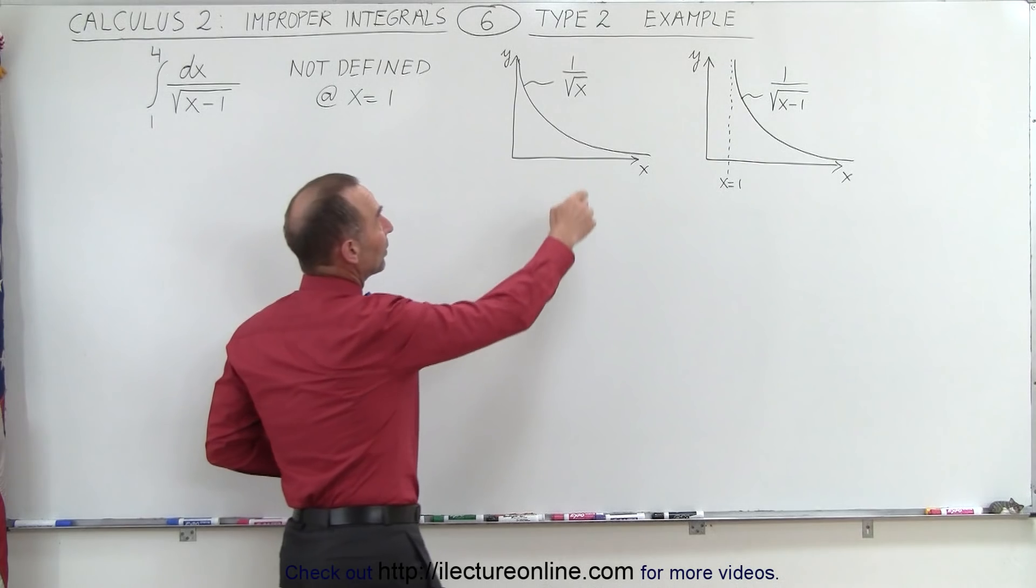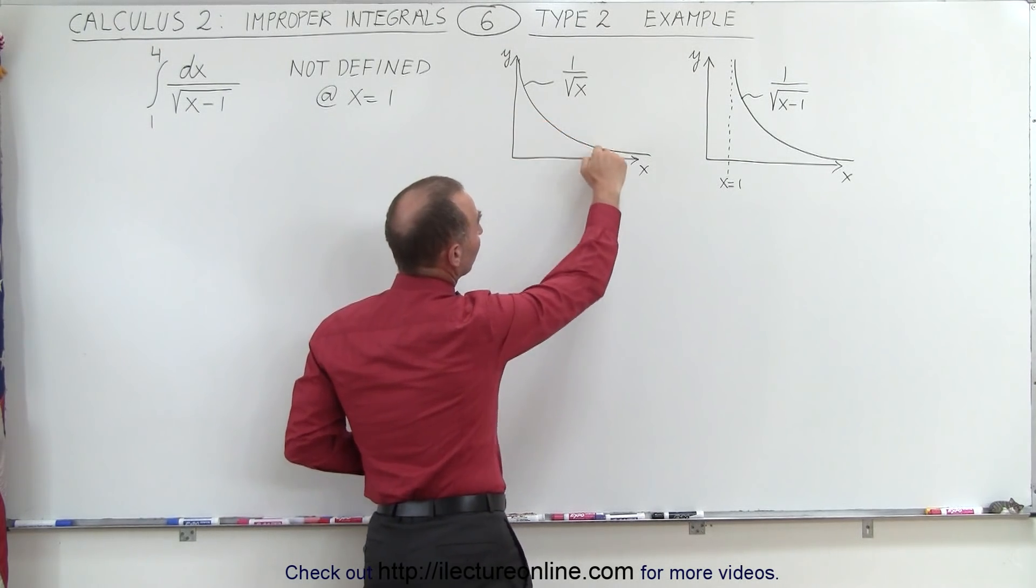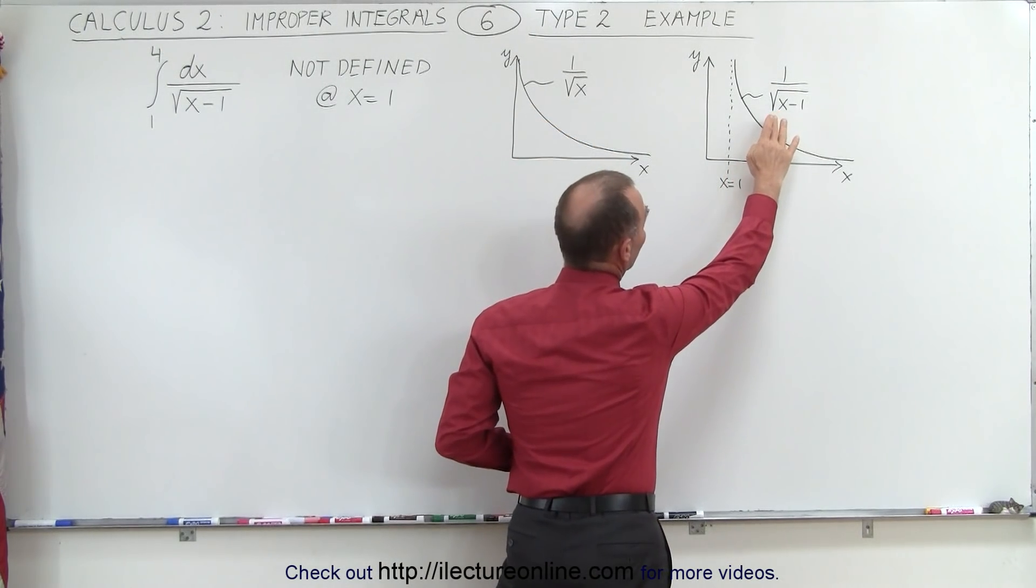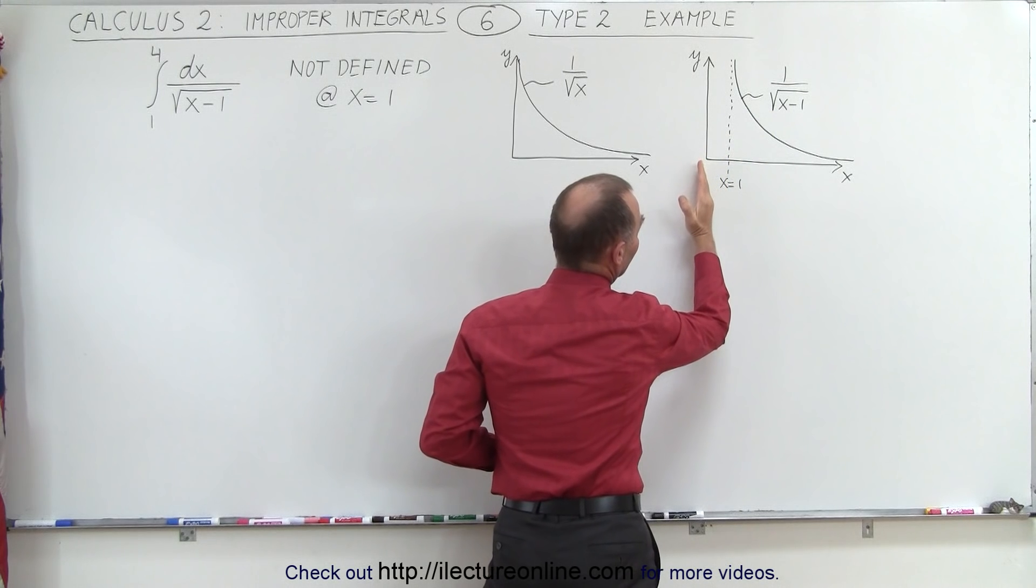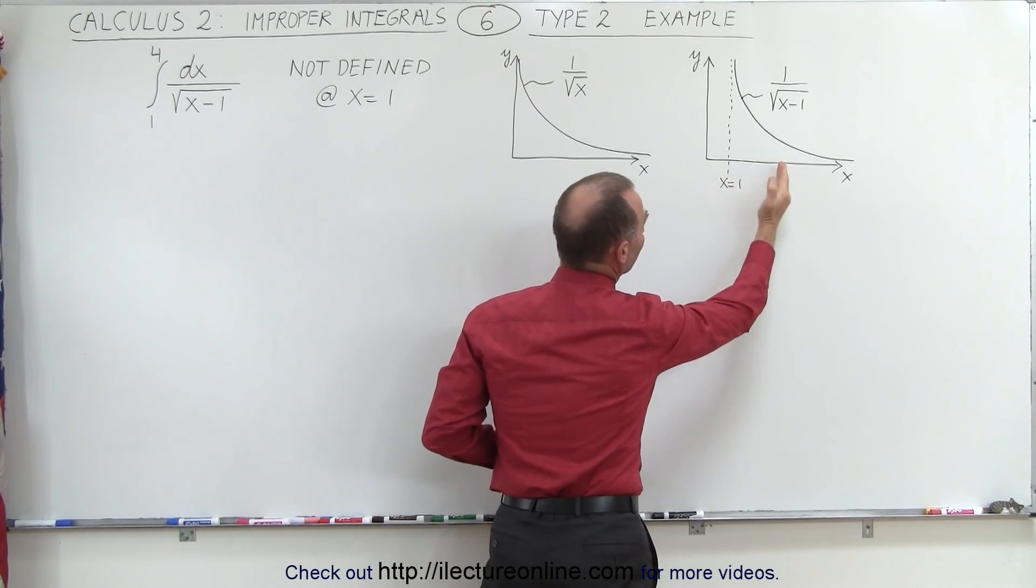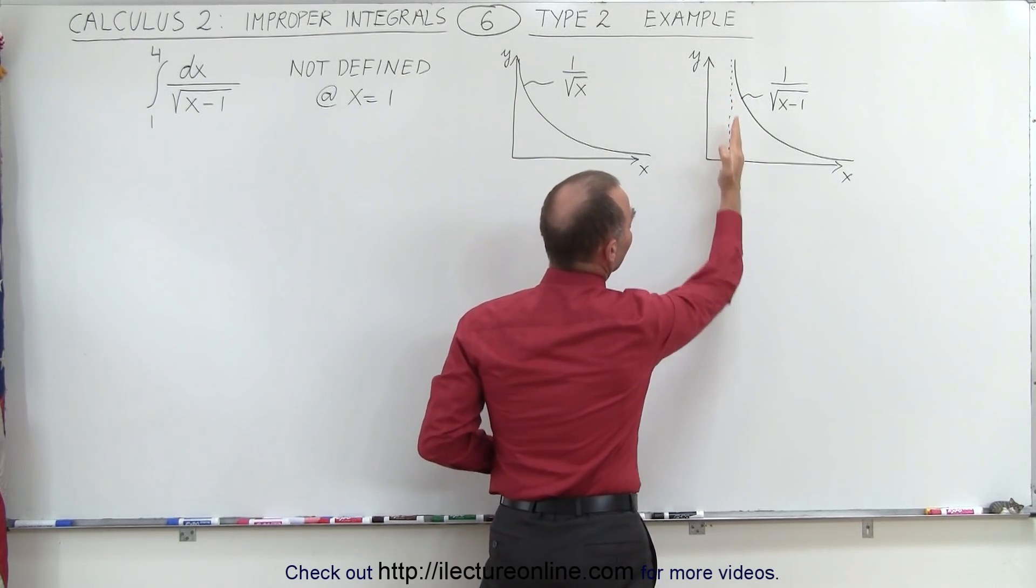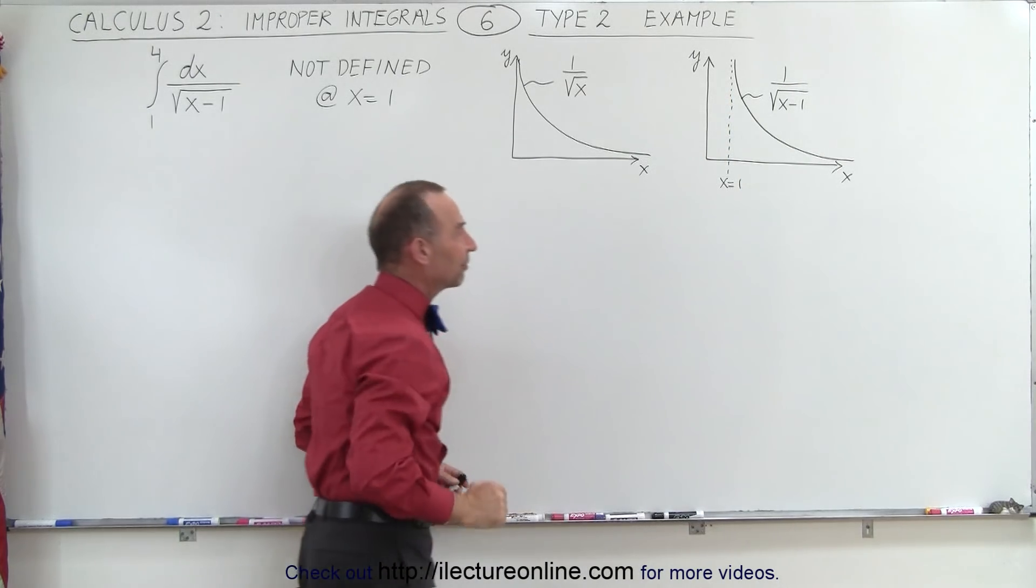Now notice that this is what the 1 over the square root of x function looks like, and this is what the 1 over the square root of x minus 1 function looks like. It simply moved over one unit to the right. Notice that x equals 1 is an asymptote for that function.